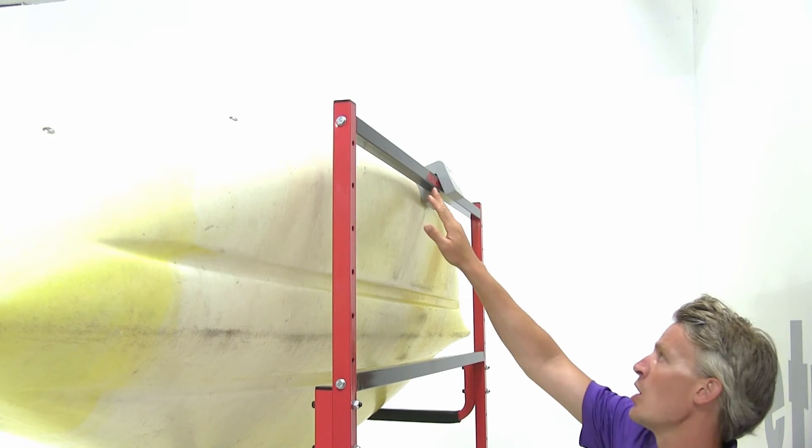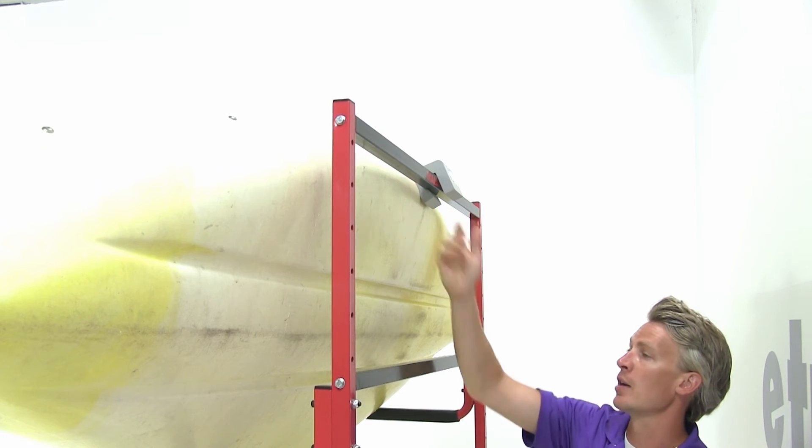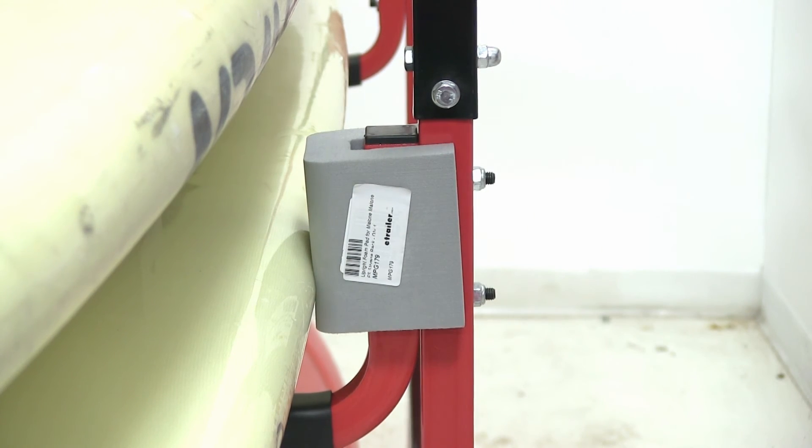You can place them on your crossbars, preventing your kayak from coming in contact with the rack, or you can place it over your hardware, protecting your paddleboard.